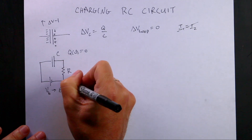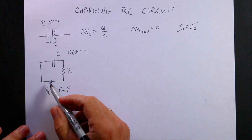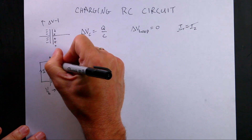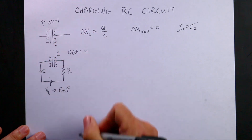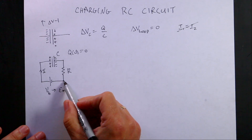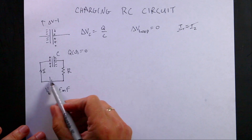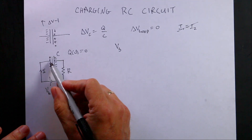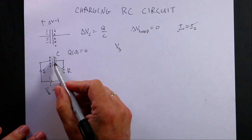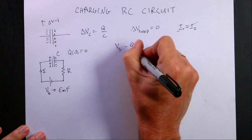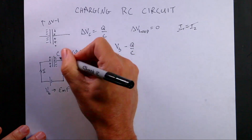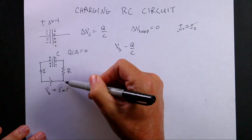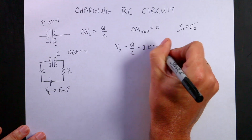Using the loop rule, I can start right here and go around the loop. The conventional current would be going this way, building up positive and negative charge. Going from the negative side of the battery to the positive gives a change in potential of V_B. Then going from the positive to the negative side of the capacitor gives a negative change in potential: negative Q over C. Going in the same direction as the current gives a negative potential drop across the resistor: minus IR. That all equals zero.